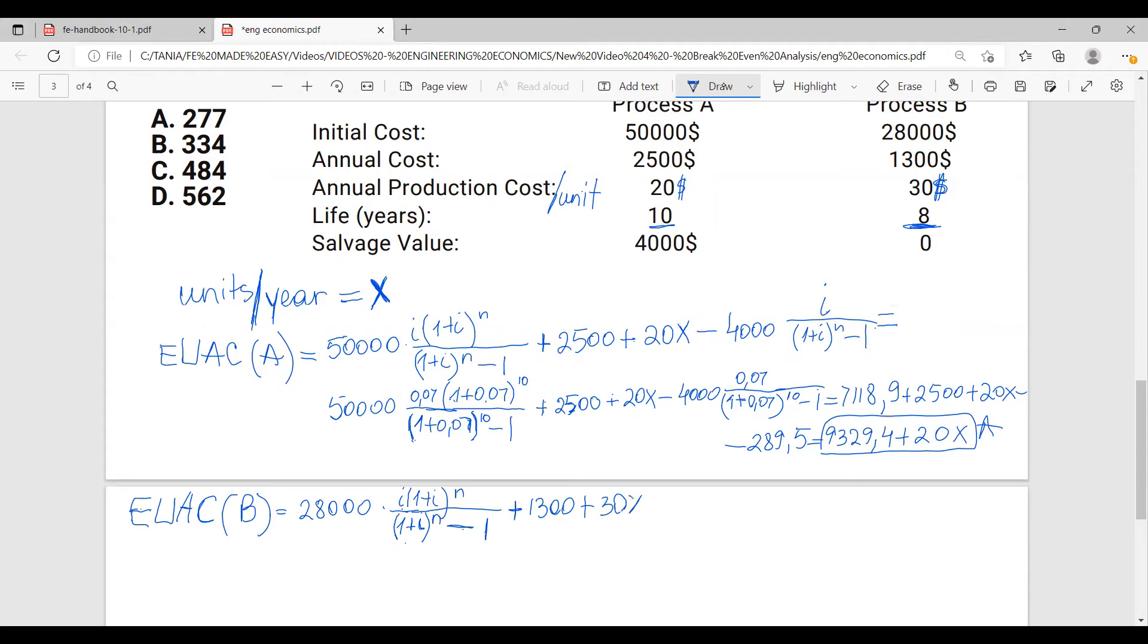It's a cost. It's positive. And then we don't have a salvage value, so we don't have to move forward. Just going to say equals to 28,000 multiplied by 0.07(1 plus 0.07) power 8. And then (1 plus 0.07) power 8 minus 1 plus 1,300 plus 30X equals. And here 28,000 multiplied by that. If you'll do the math, you'll get 4,689.1 plus 1,300 plus 30X.